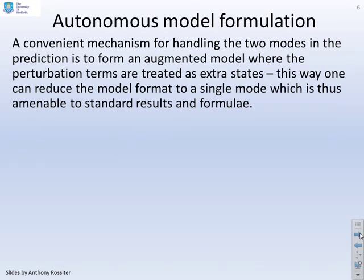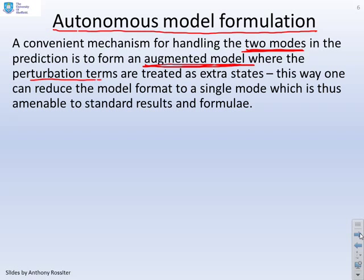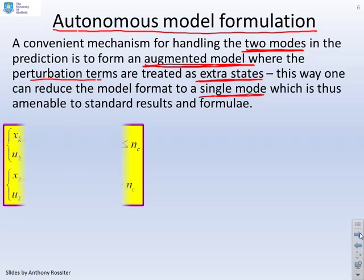What we're going to use is this thing called an autonomous model formulation. So although we seem to have states x and we've got all these extra degrees of freedom and we've got two different modes, and you're saying that's quite clumsy, what we're going to try and do is form an augmented model, which makes these two modes look like just one mode, and that makes things easier to handle. And the way we're going to do that is by treating the perturbation terms as extra states in our augmented model. So in other words, we reduce the model format to a single mode, and this then means it's amenable to standard results and formula in the state space field.